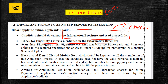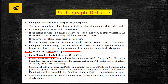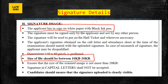Important instructions: scan your photograph and signature. You need a valid email ID and mobile number, as you may receive exam-related communications. Payment will be made online. For the photograph, the size should be between 20KB and 550KB — it should be a recent passport-size colored photograph. For the signature, the size should be between 10KB and 20KB, signed on white paper with black ink pen.